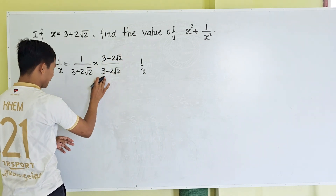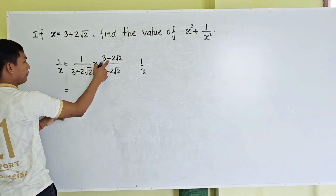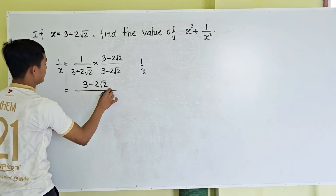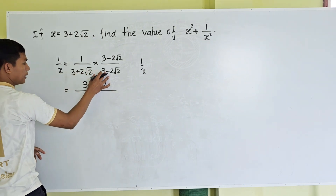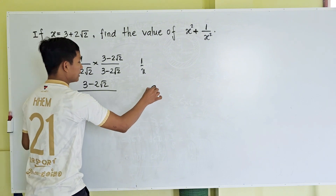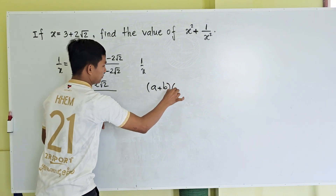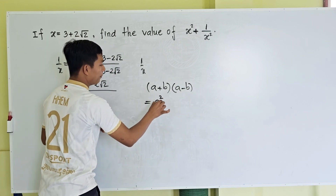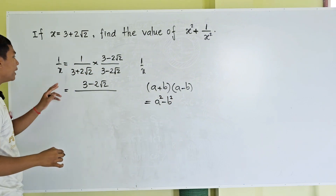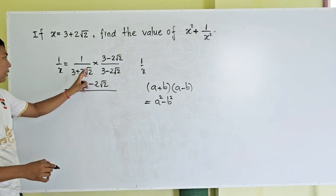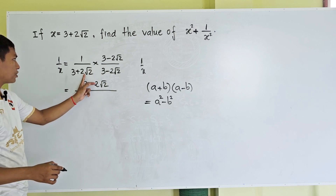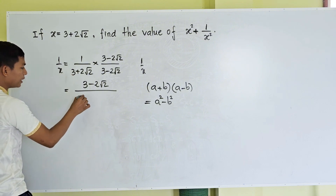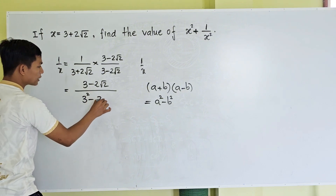In the numerator we get 1 times 3 minus 2 square root 2, which gives us 3 minus 2 square root 2. In the denominator, we use the formula: (a plus b) times (a minus b) equals a squared minus b squared. Here a equals 3 and b equals 2 square root 2, so we get 3 squared minus (2 square root 2) squared.